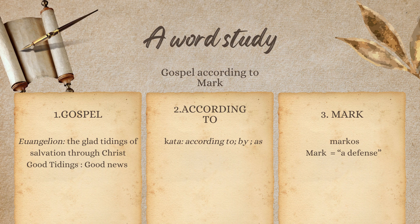And then 'according to' — which means kata in Greek, meaning according to, by, as. When you look at these books in the Greek, you'll see it's not even going to say 'the gospel.' It's not going to say euangelion kata markon. It's just going to say kata markon, kata lukan, kata yohanan. This is just the way they worded it early in the first century church — they would only have the names on it.